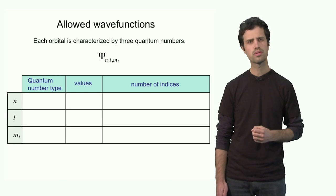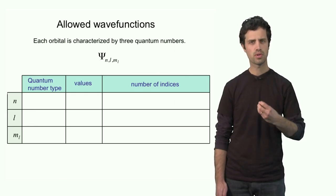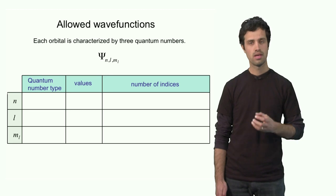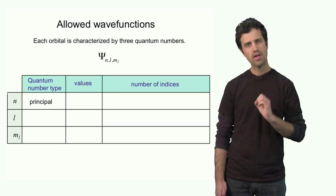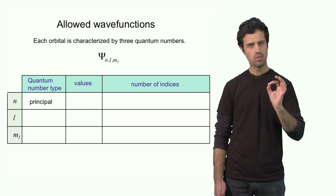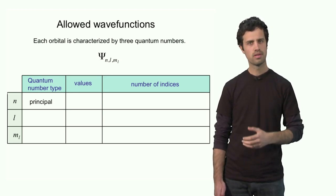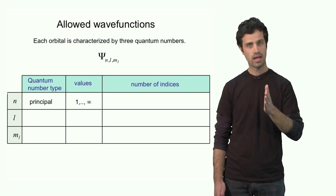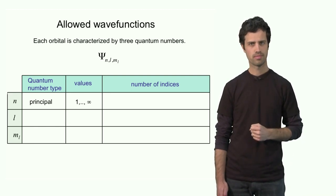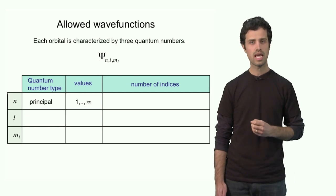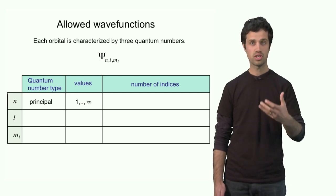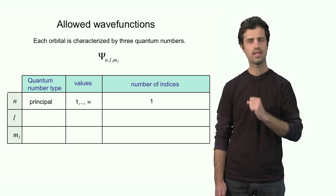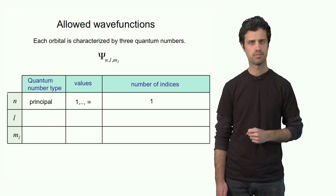The first quantum number is called the principal quantum number, n. Its values are anywhere between 1 and infinity, as long as it is an integer. Each orbital is labeled with a principal quantum number n, so one index is enough to describe the orbital.